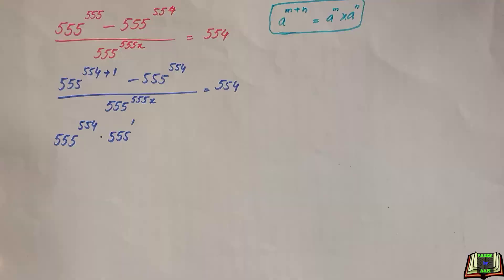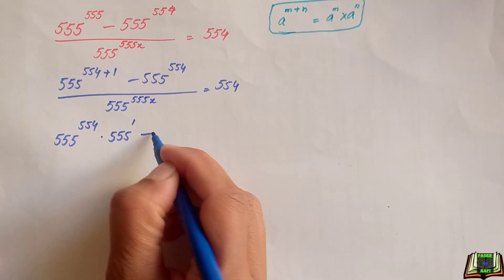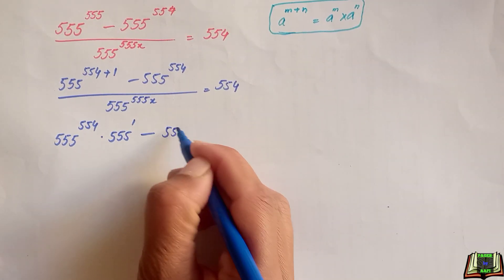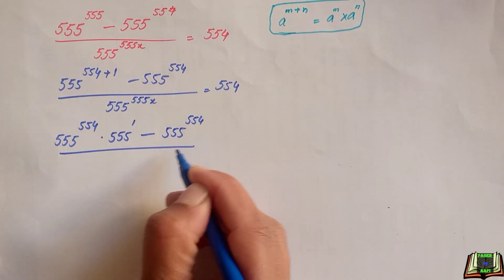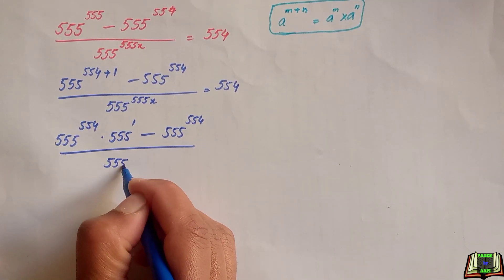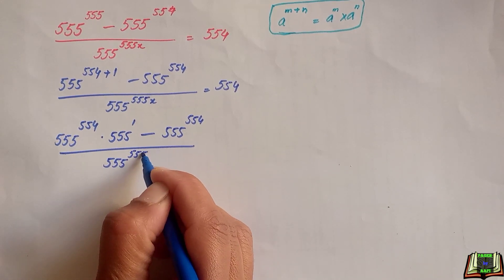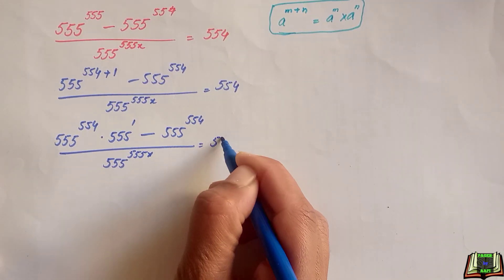So basically we use that rule here and rest part as it is 555 raised to power 554 divided by 555 raised to power 555x is equal to 554.